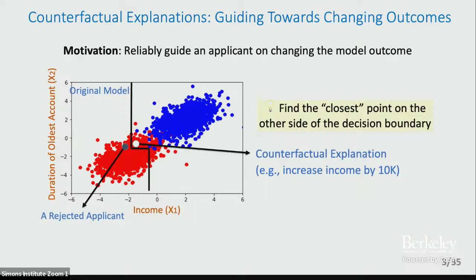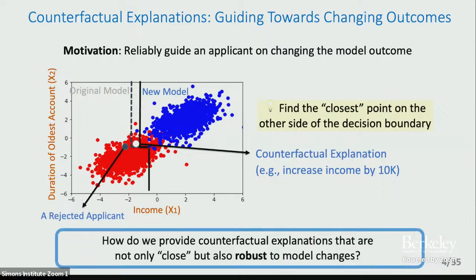What happens is that all of these machine learning models being used to make decisions are updated quite frequently. Sometimes they might be updated due to retraining on a few additional data points, or they might be retrained using an additional seed or changing the hyperparameter, and then the models can change. When these models change, sometimes these counterfactual explanations can become invalid — like you tell the applicant to increase their income by 10K, and they actually do it and come back, but now because your model has updated, the counterfactual explanation is no longer valid and they are still getting rejected for the loan. So the question we ask is: how do we provide counterfactual explanations that are not only close, but also robust to these kinds of model changes?